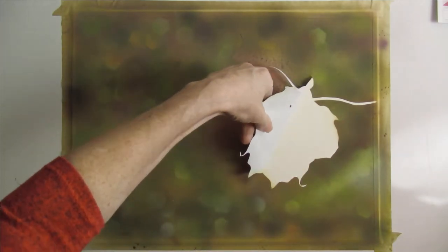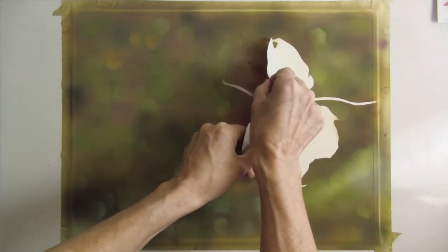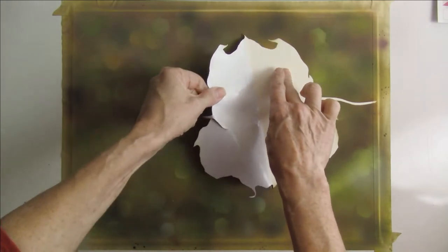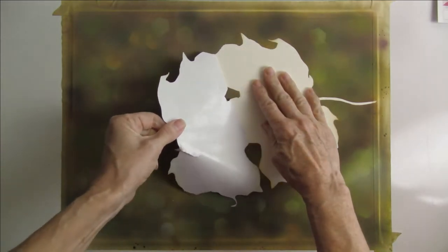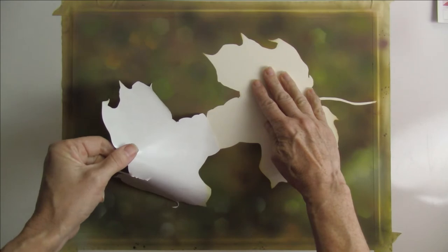The paper is Strathmore Bristol Smooth 300 series drawing paper. The surface is untouched and ready for the colored pencil application.